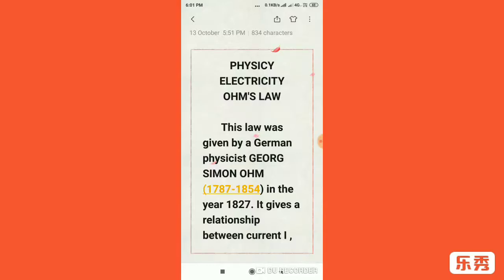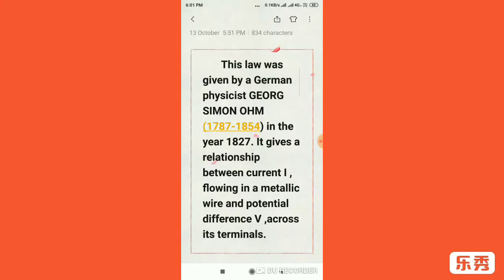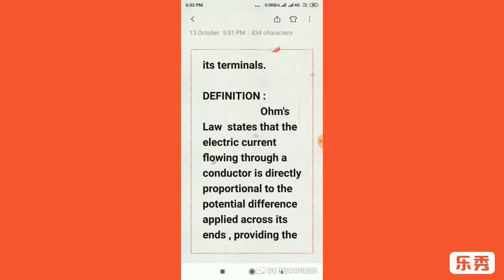This law was given by a German physicist George Simon Ohm in the year 1827. Now if you ask me why this is very fundamental, it's because it gives the basics of electricity. It gives the relationship between current I flowing in a metallic wire and potential difference V across its terminal.